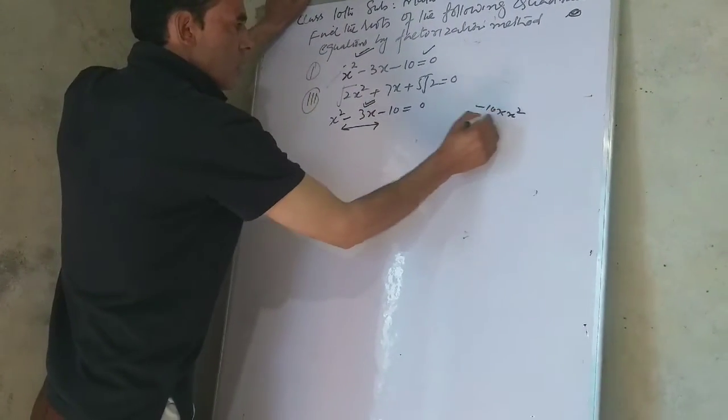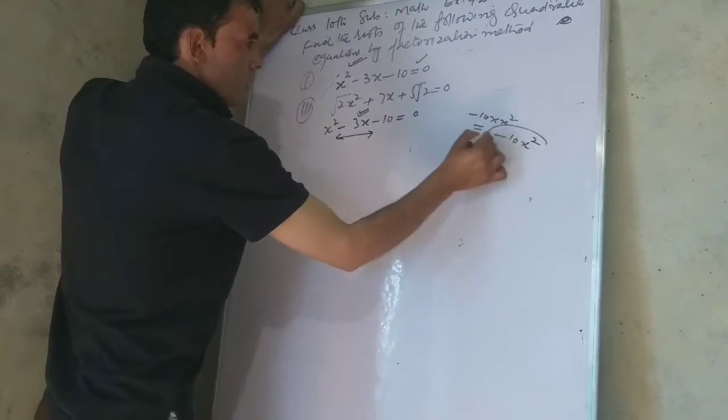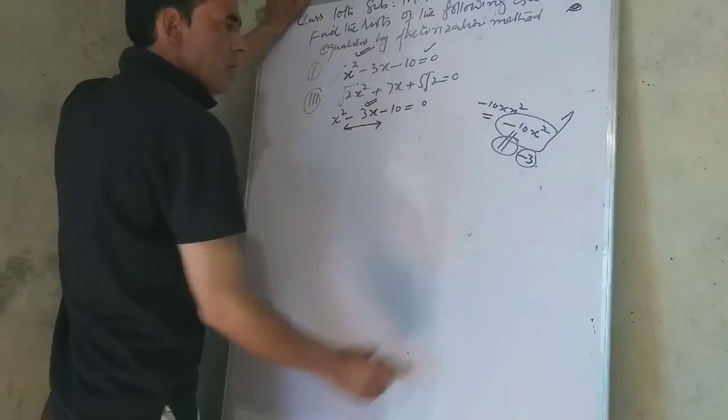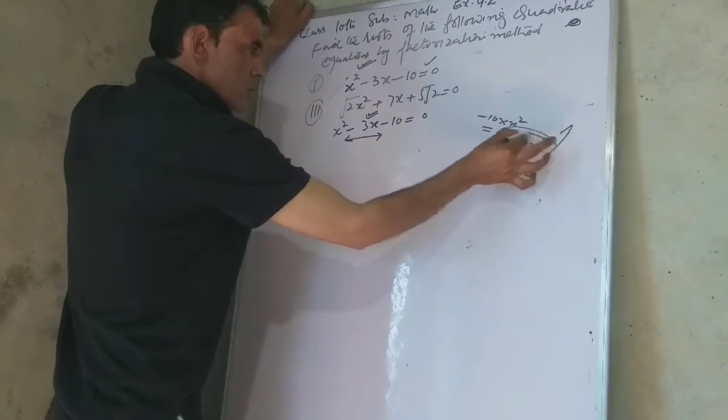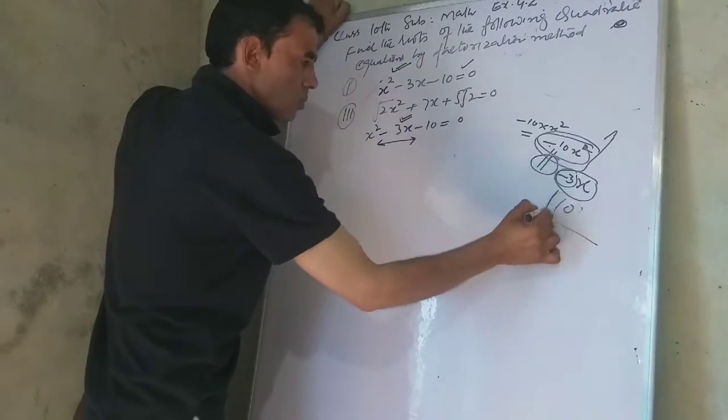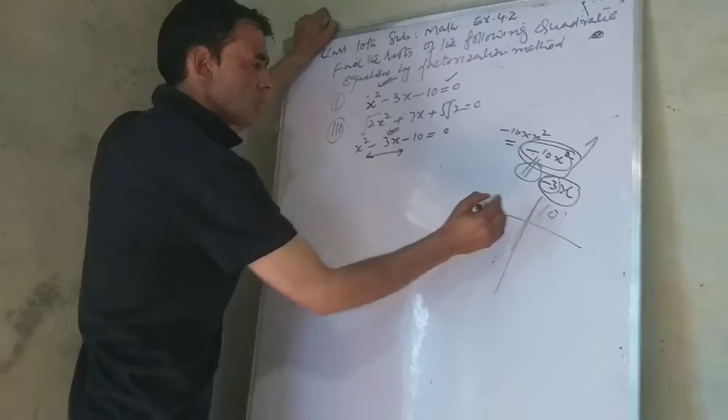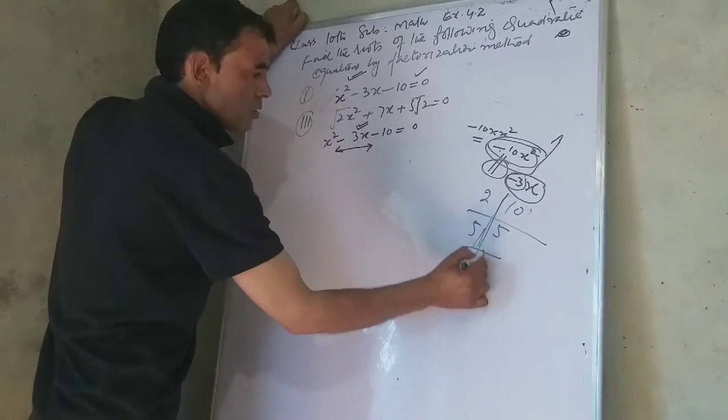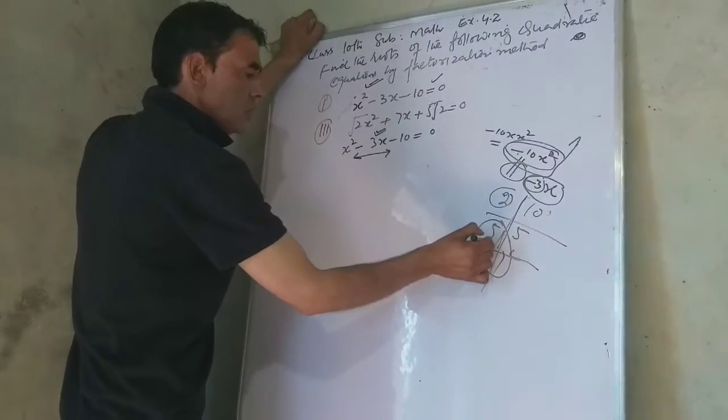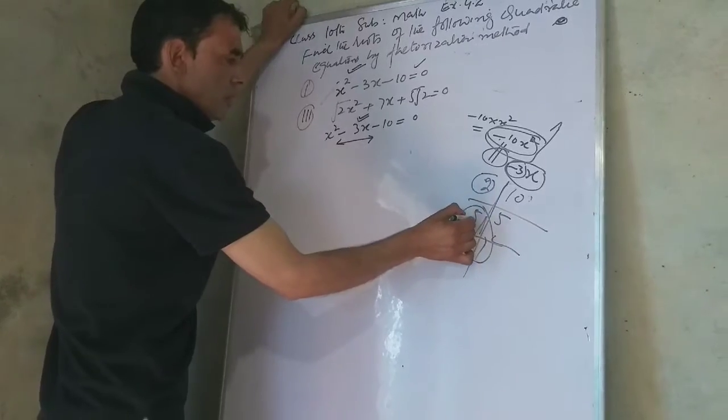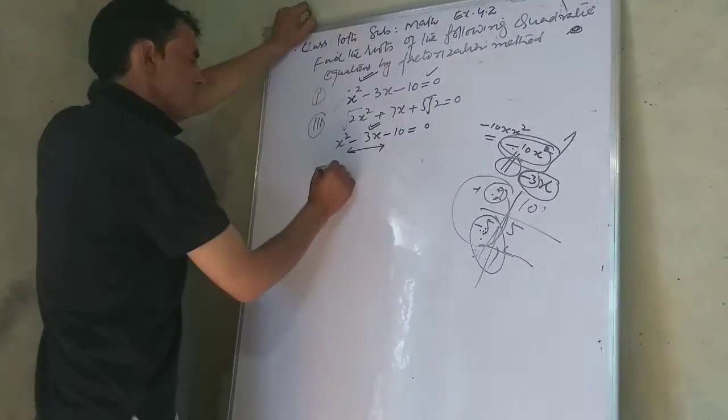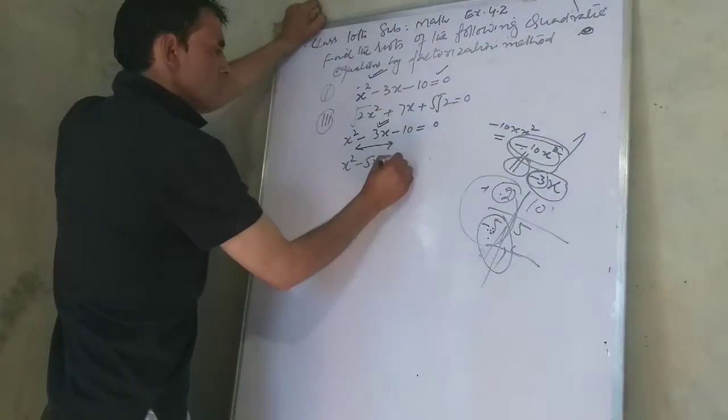We have x² - 3x - 10 = 0. We need to factorize. Finding the prime factors of 10: 2 times 5 equals 10. When we have 5 times 2, we get 10, and when we subtract 2 from 5, we get 3. So we can rewrite this as x² - 5x + 2x - 10 = 0.